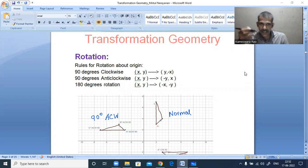Here we have listed the rules for rotation about origin. If you want to rotate the given object 90 degrees clockwise then x, y is transformed to y, minus x. If you want to rotate 90 degrees anti-clockwise direction then x, y is transformed to minus y, x.